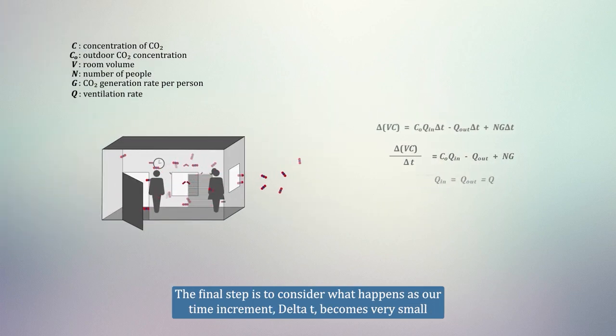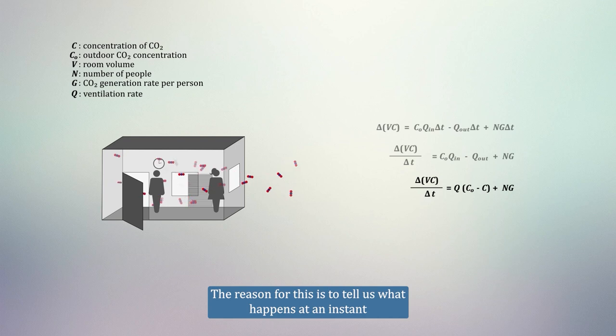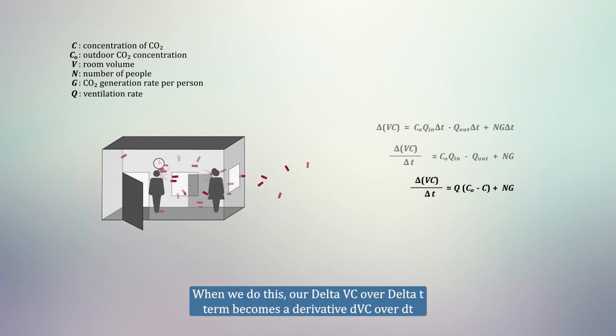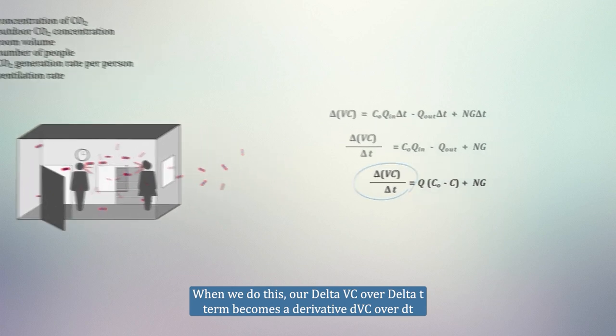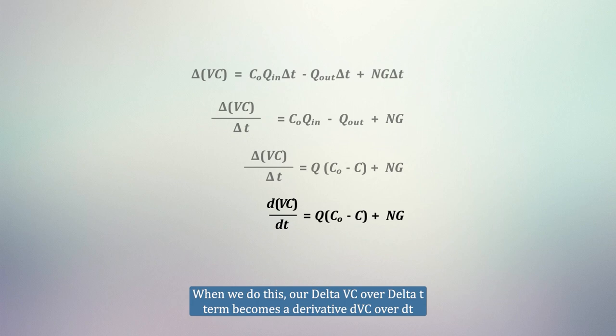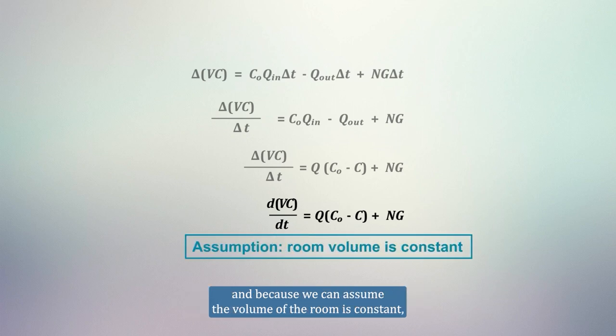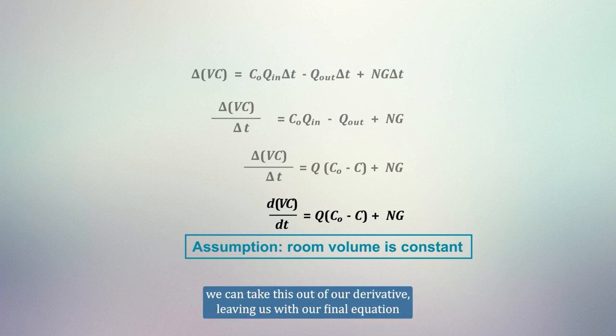The final step is to consider what happens as our time increment delta T becomes very small. The reason for this is to tell us what happens at an instant. When we do this, our delta VC over delta T term becomes a derivative, dVC over dt. And because we can assume the volume of the room is constant, we take this out of the derivative, leaving us with our final equation.